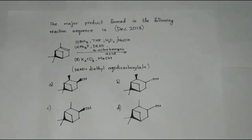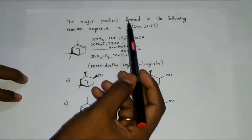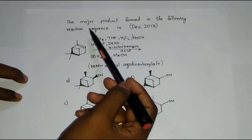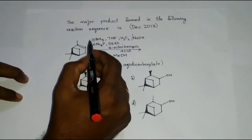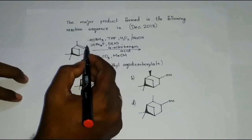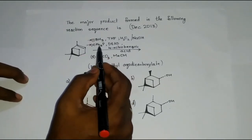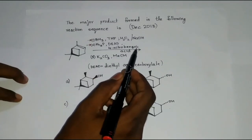Hello friends, in this video we will solve a question from CSIR NET December 2013. The major product formed in the following reaction sequence is: these reagents are for hydroboration. If you look at this reagent triphenyl phosphine DEAD 4-nitrobenzoic acid, it is used in Mitsunobu reaction.